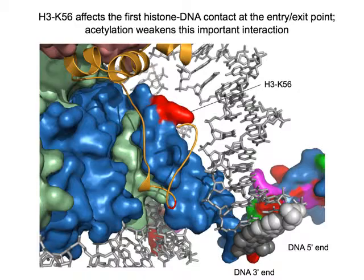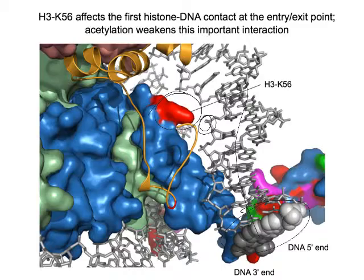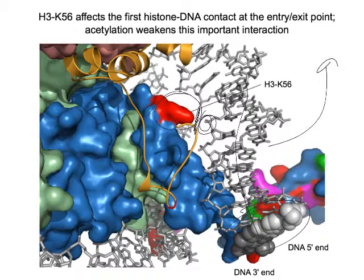Here's an example where a residue on H3 — lysine 56 — is sitting right near the entry-exit point. That lysine, when unmodified, can interact with the phosphodiester backbone on the DNA and stabilize that interaction. But if we acetylate it, we lose the positive charge on the lysine, and that's going to weaken this interaction. It'll be easier to displace the DNA from the entry-exit point, and it'll start to unpeel the DNA from a nucleosome. That's at least one example where we can change the physical properties of a nucleosome. But for the most part, these are going to be just information-bearing molecules.